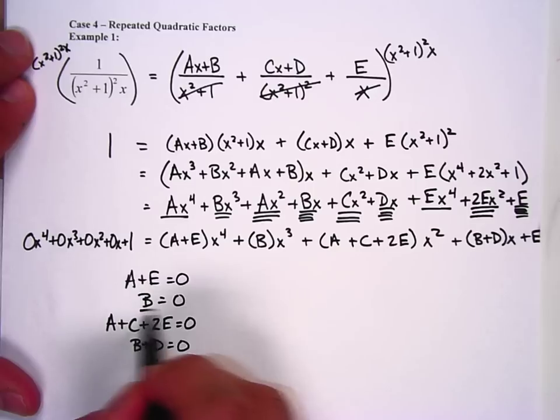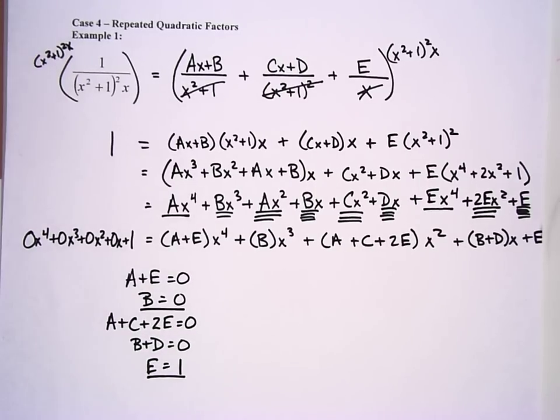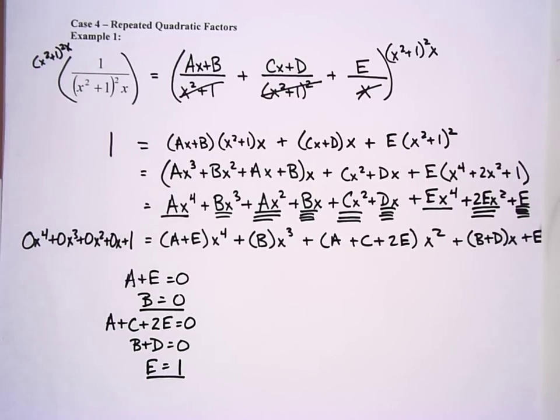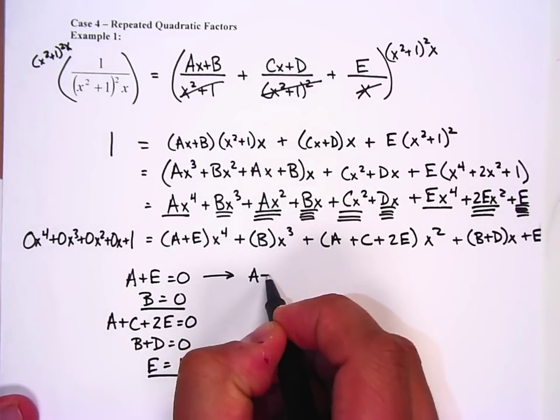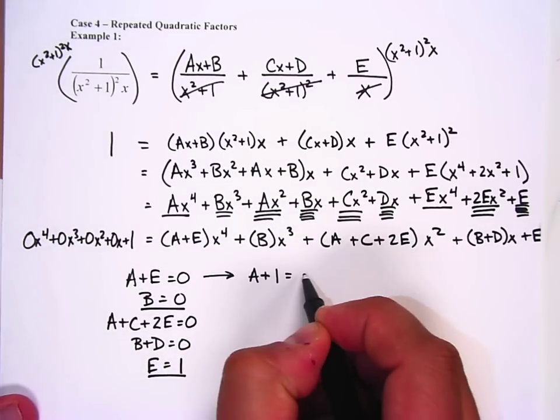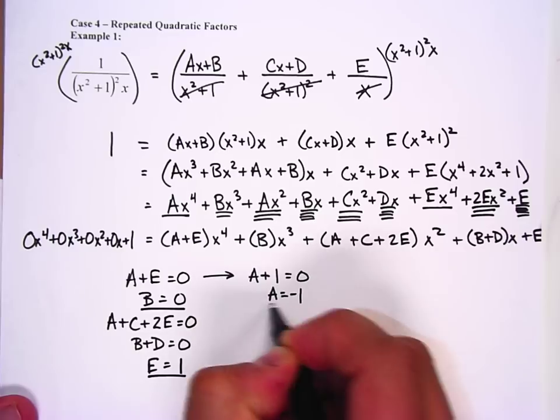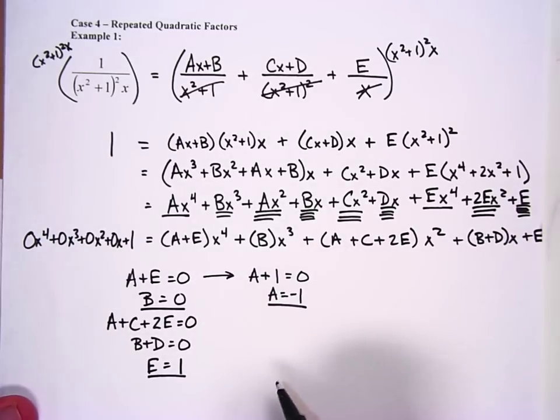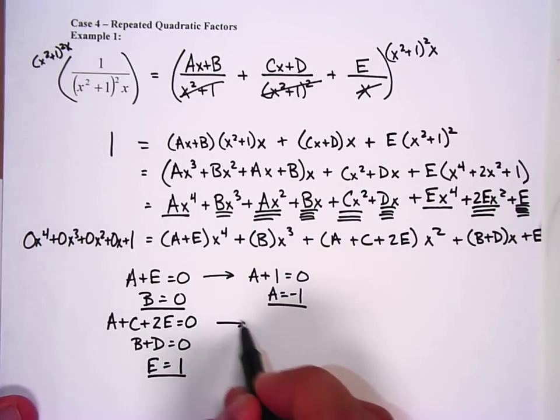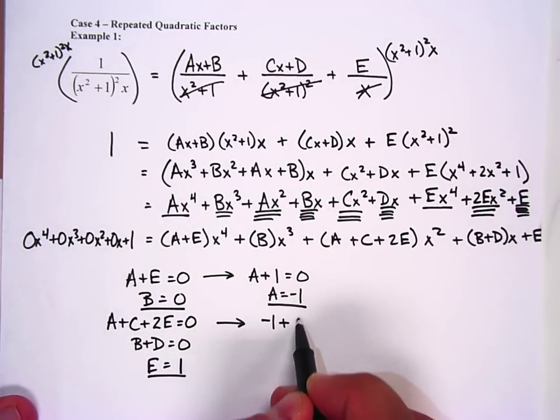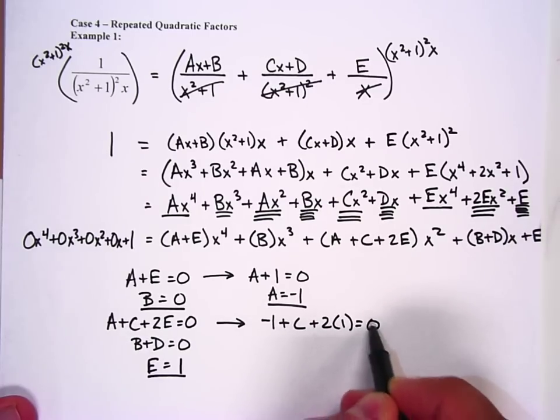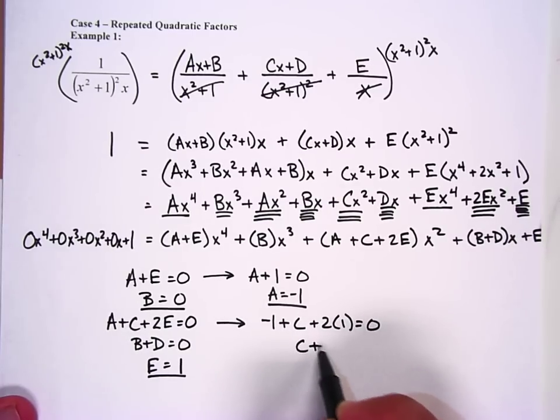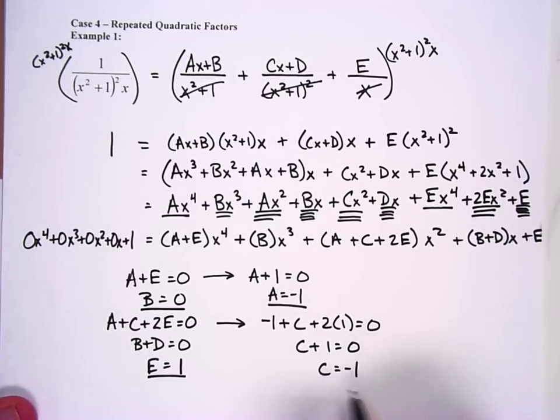Well, I know e equals one, I know b equals zero. That should help out in solving the other problems. Because if I take this first equation, and I know that e is equal to one, I can say a plus one equals zero. A has to equal negative one. Now I have a, b. I also have e, so I can take this equation, and I can say negative one plus c plus two times one equals zero. It's going to say c plus one equals zero. C has to equal negative one.